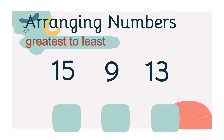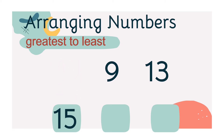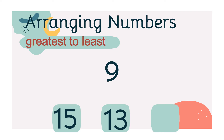How about this? Let's try to arrange them from greatest to least. Which number is the greatest or has the biggest value? Will you point on the screen? Number 15 is the greatest number. How about the next number? Very good! Number 13. After 13, the least number is number 9. If we arrange them from greatest to least, number 15 comes first, then 13, and then number 9.